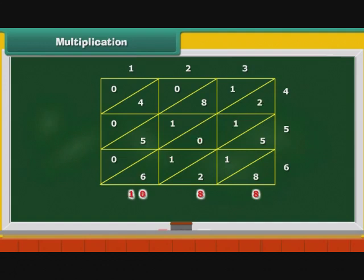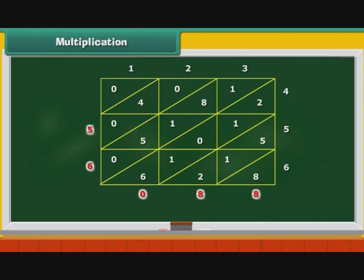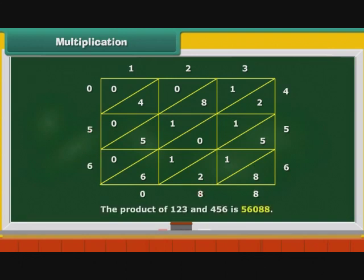Write 0 and carry over 1 to the next diagonal. That diagonal has elements 1, 8, 1, 5, and 0; their sum including the carry is 16. Write 6 and carry over 1 to the next diagonal with elements 0, 4, and 0; their sum including carry is 5. Write 5. The last diagonal has only one element: 0. Write 0. Read the digits from top to bottom: 0, 5, 6, 0, 8, 8. Therefore, the product of 123 and 456 is 56088.